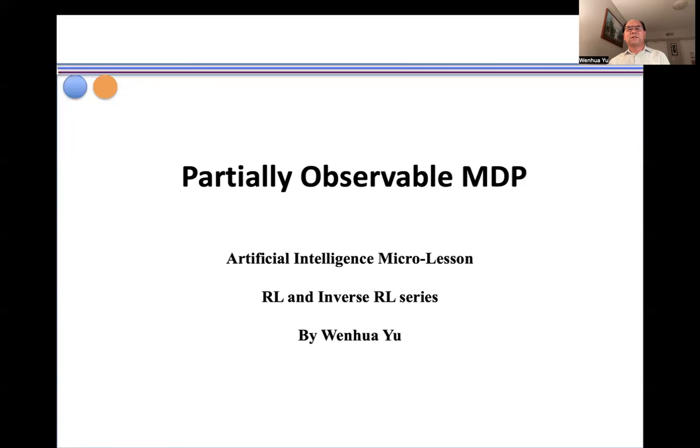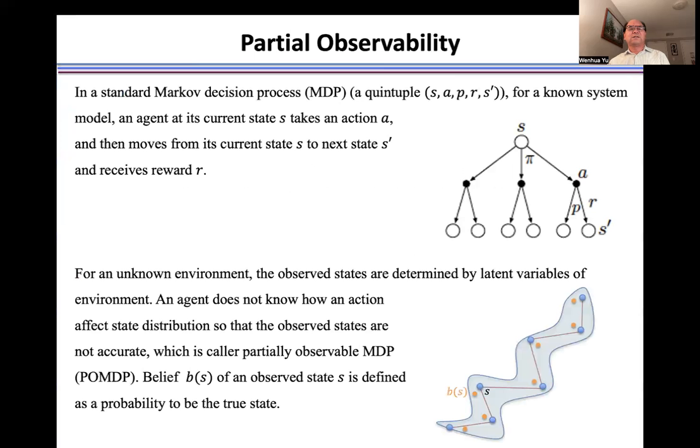Now I introduce a partially observable Markov decision process. In a standard Markov decision process, the system dynamic or system model is known.